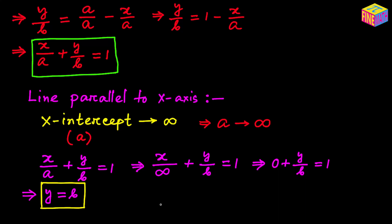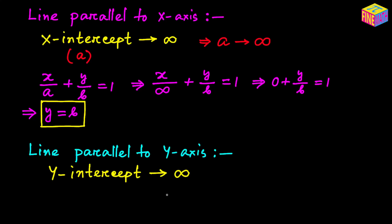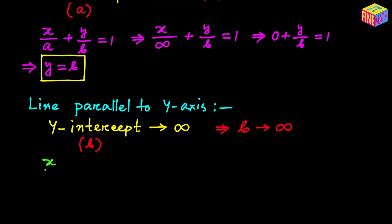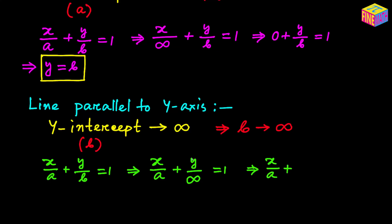For a straight line parallel to the y-axis, the y-intercept (lowercase b) approaches infinity. Using that in our standard form x/a + y/b = 1, we substitute infinity for b: x/a + y/∞ = 1. Since y divided by infinity is 0, this becomes x/a + 0 = 1. Multiplying both sides by a gives x = a. That is the equation of a straight line parallel to the y-axis.